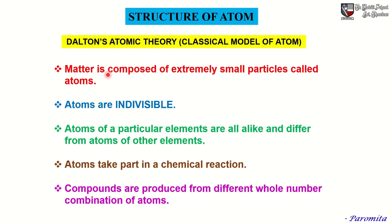According to Dalton's atomic theory, matter is composed of extremely small particles called atoms. Atoms are indivisible — that means atoms can neither be created nor be destroyed. Atoms of a particular element are all alike and differ from atoms of other elements. Atoms of the same element have the same atomic weight, whereas atoms of different elements have different atomic weights.